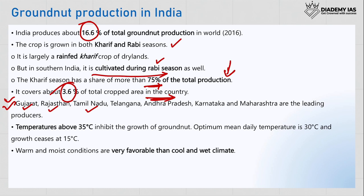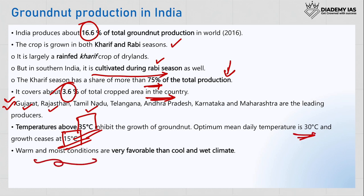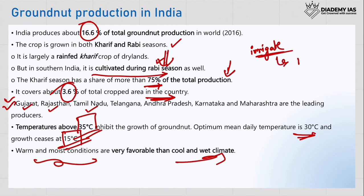The temperature required for groundnut is around 30 degrees — above 35 degrees will inhibit growth and below 15 degrees will also inhibit it. The optimal daily mean temperature is around 30 degrees. Warm and moist conditions are favorable compared to cool and wet climate. In south India, especially Tamil Nadu, groundnut fields are irrigated, which is why the output is much higher compared to neighboring states like Andhra Pradesh and Telangana.